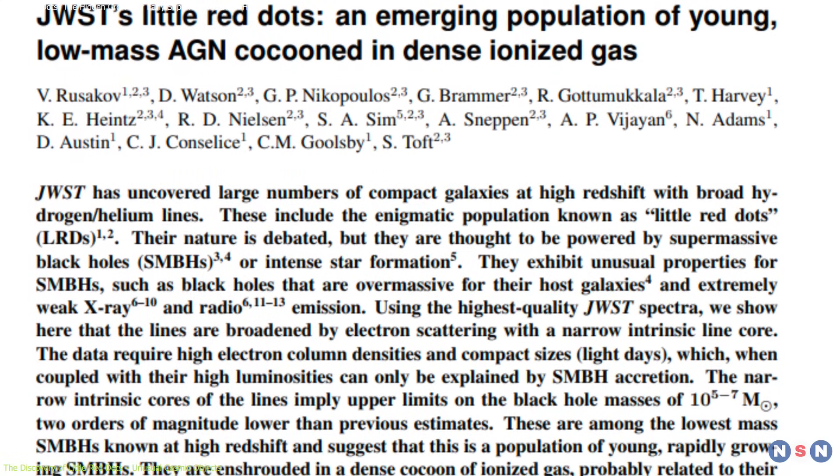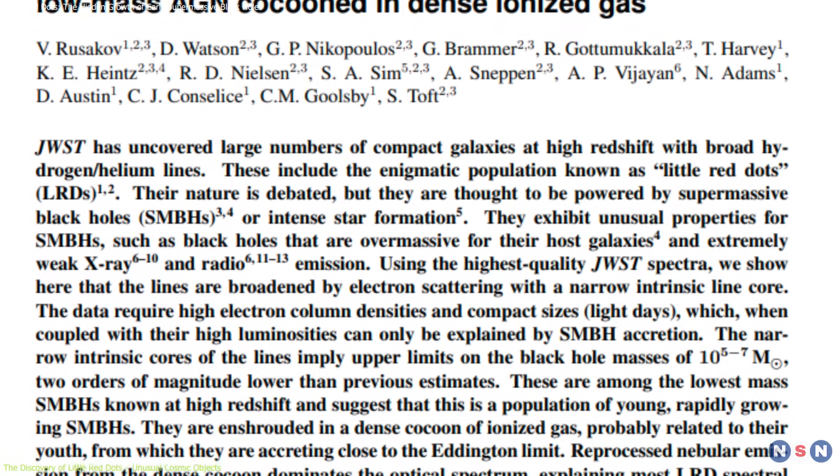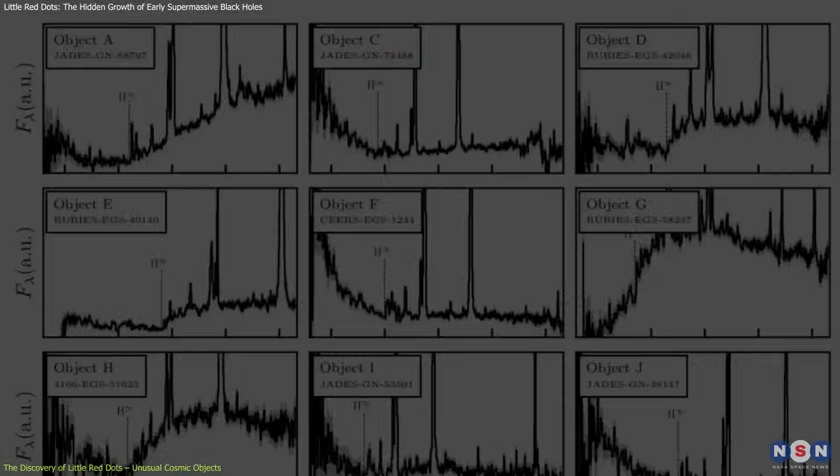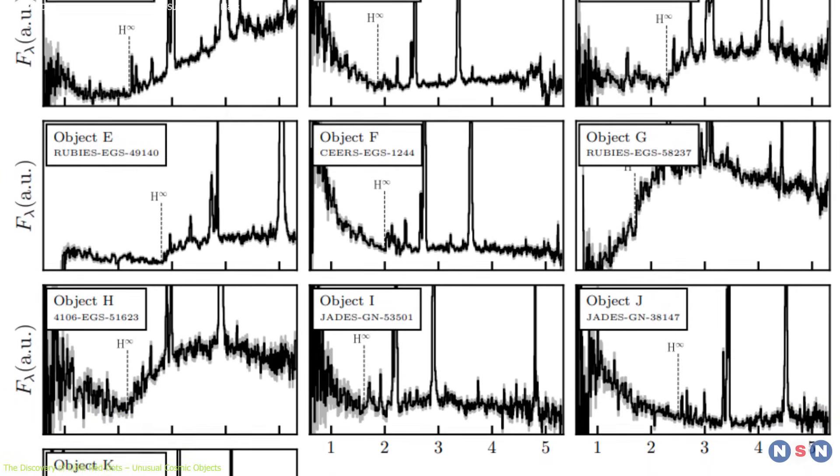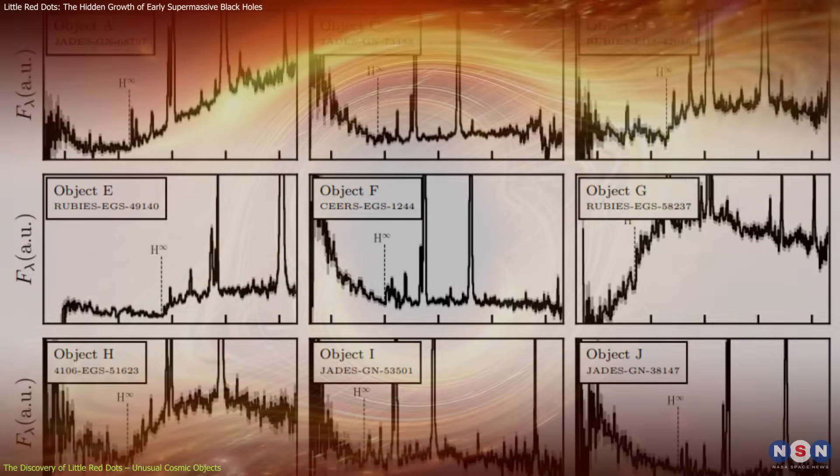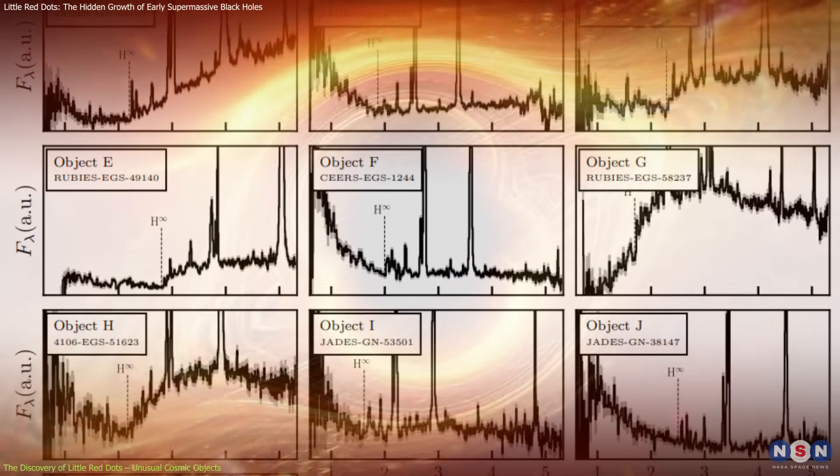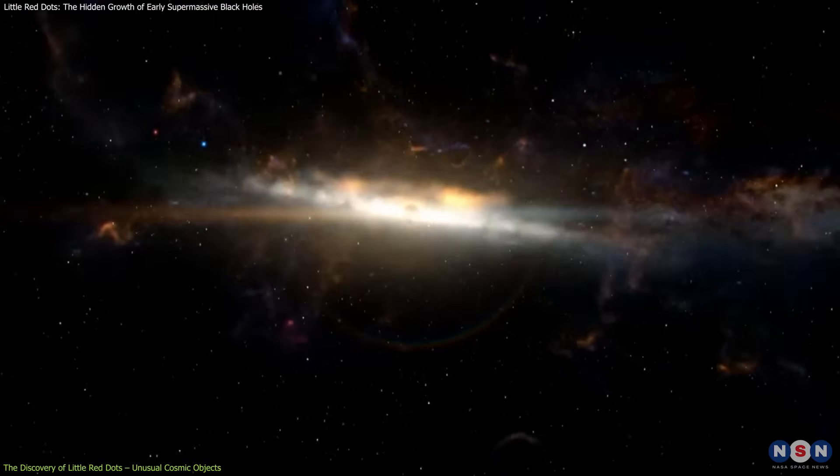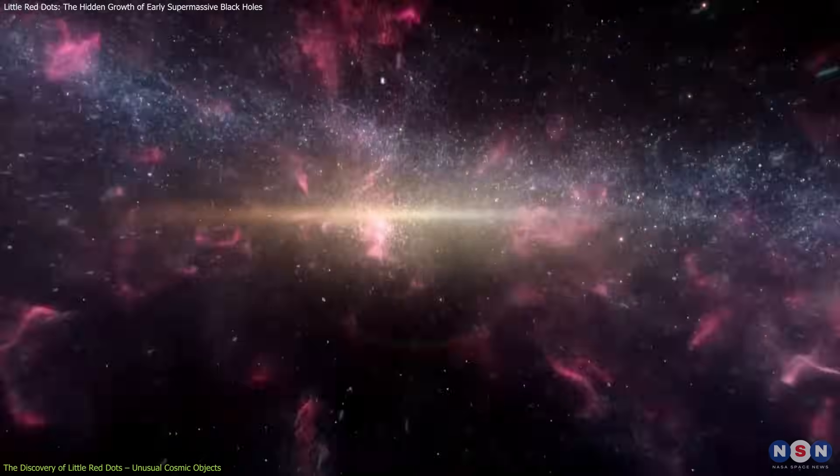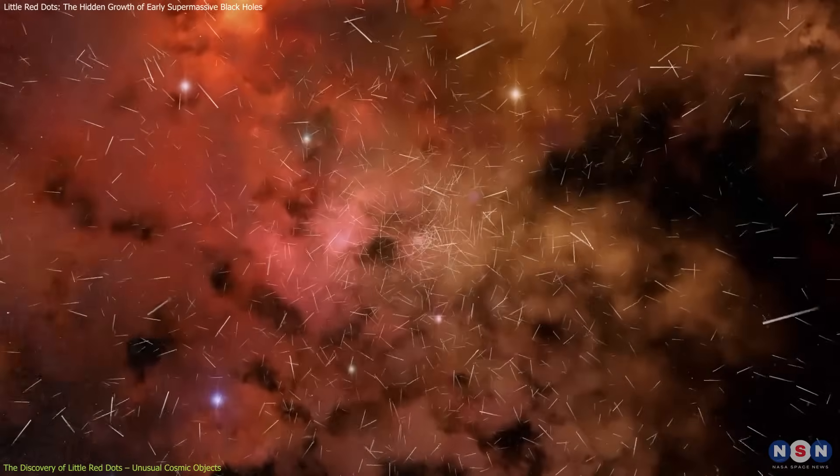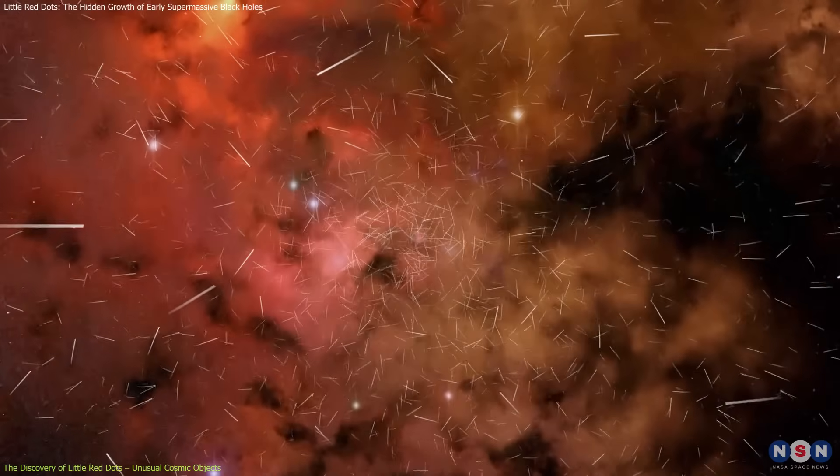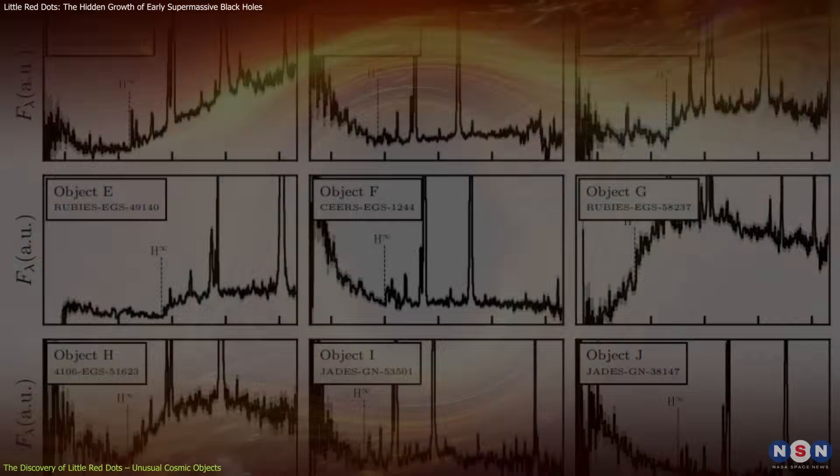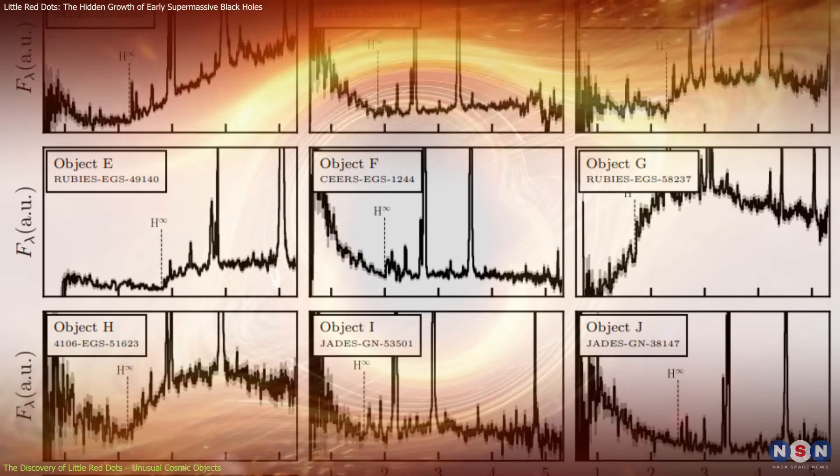To explore this mystery further, a new study analyzed 12 LRDs for which Webb had gathered high-resolution spectra. The researchers compared the data to models of supermassive black holes and found that these black holes are embedded in highly ionized, dense galactic clouds. The presence of free electrons in these clouds absorbs much of the X-ray and radio light, explaining the lack of emissions in those wavelengths.